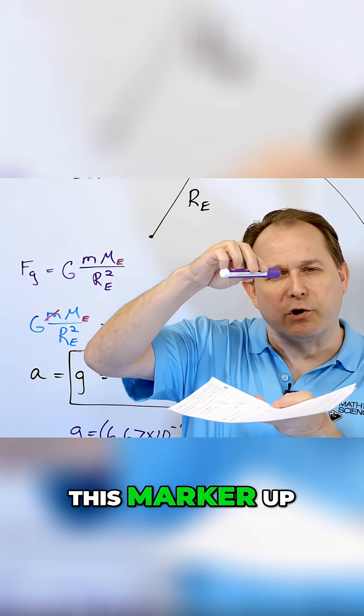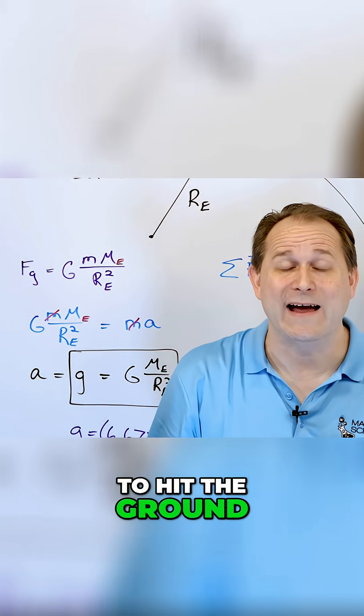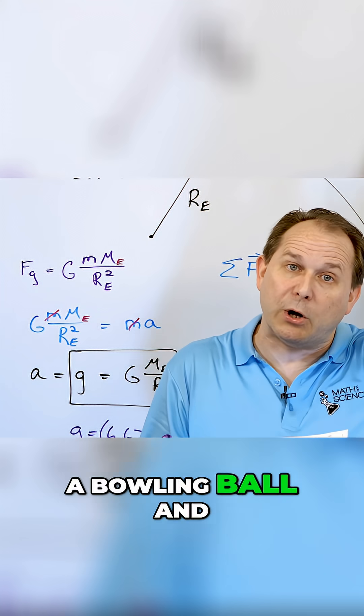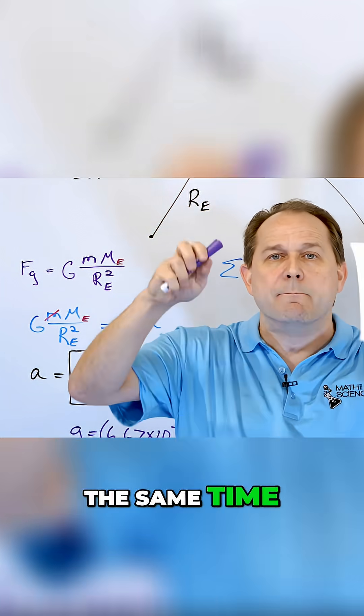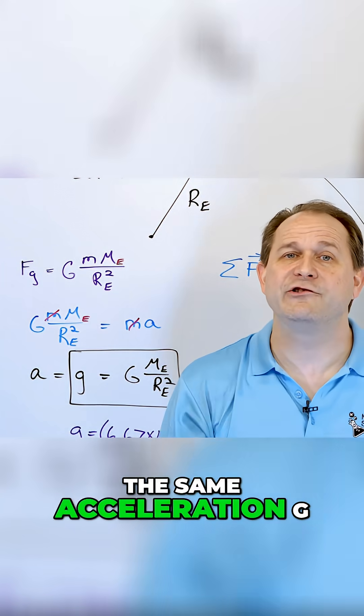So if I hold this marker up and I measure how long it takes to hit the ground, and I take something very heavy, like a bowling ball, and I drop it at the same time, both of these objects will begin to fall at the same rate, the same acceleration G.